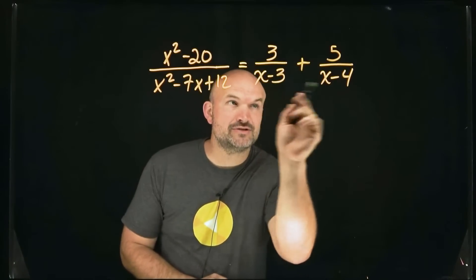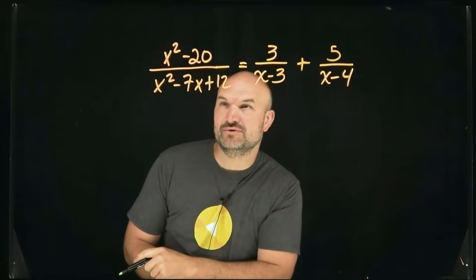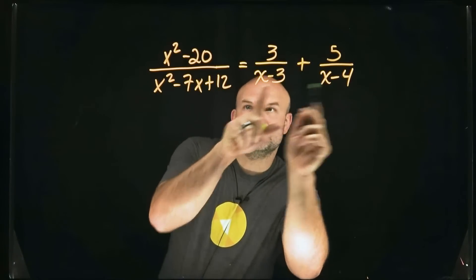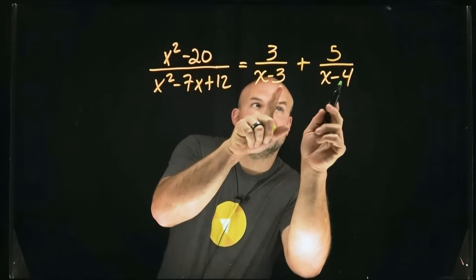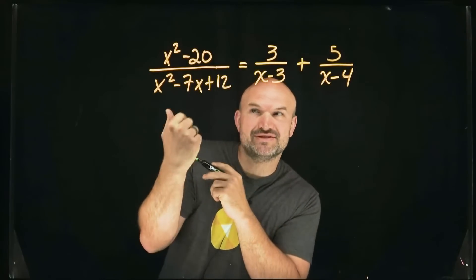So let's go and see, does x minus 3 times x minus 4 multiply to give me x squared minus 7x plus 12? Well, yeah, these two multiply to give you 12, and negative 3 and negative 4 are going to add to give me negative 7. So guess what? It does check out.